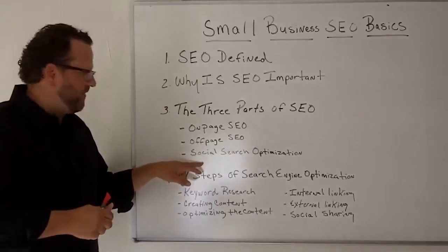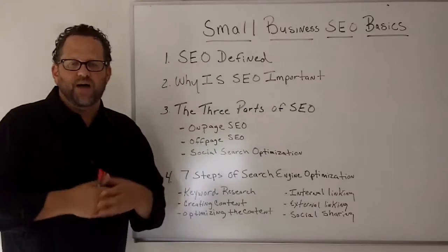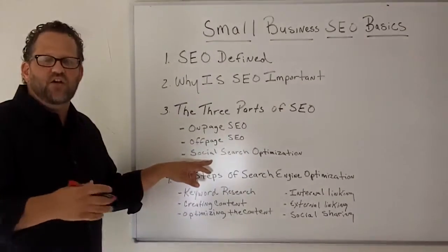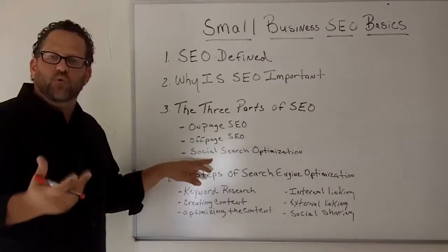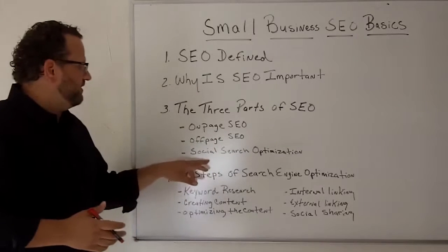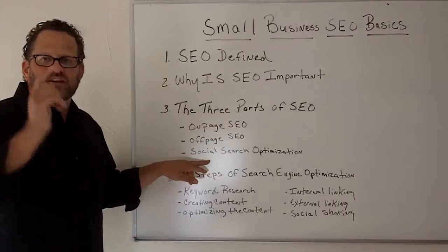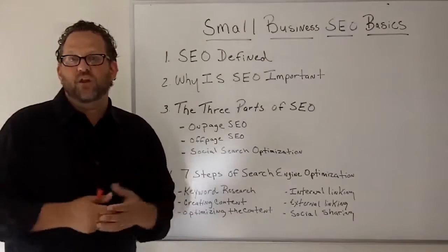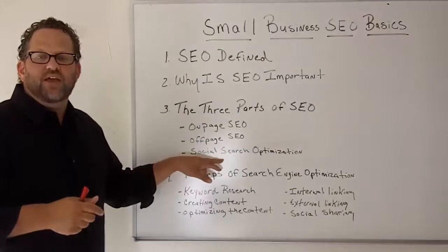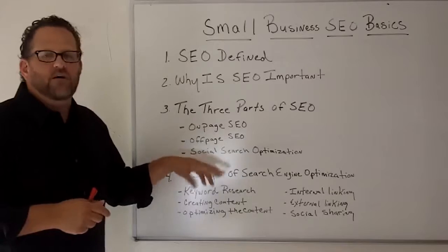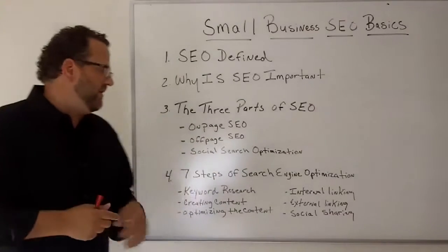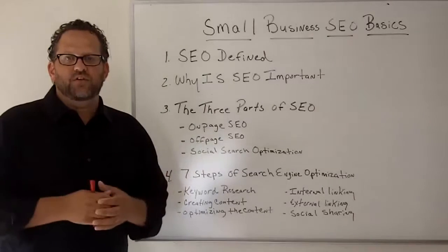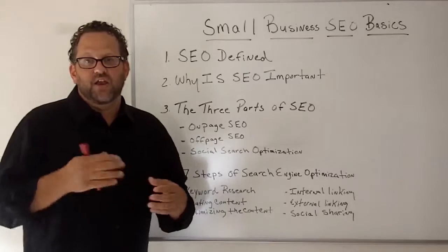The third part of the SEO process is social search optimization, which is relatively new. This is the ability to share your content throughout social media sites like Facebook, Twitter, YouTube, and Google+. How often is your content liked or shared on Facebook? How many times is it tweeted and retweeted on Twitter? How many times do people hit the Google Plus button? Are you doing YouTube videos and getting comments? Social search optimization is really important now, and you should make it easy for visitors to share your content across their social networks.